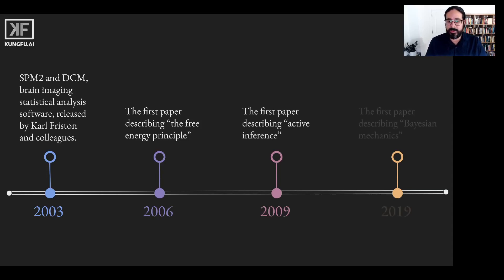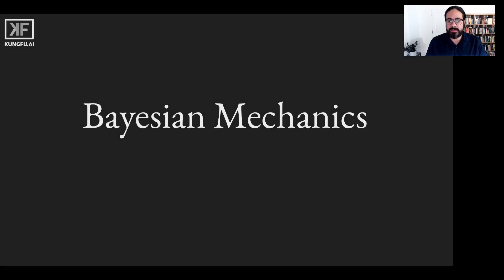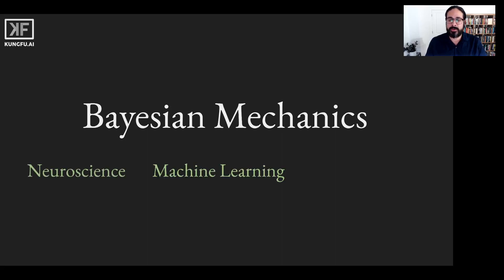By the mid 2010s, we saw further extension of this work attempting to provide a mathematical description of living systems in general. Today, this field is called Bayesian mechanics — the union of neuroscience, machine learning, and statistical physics.